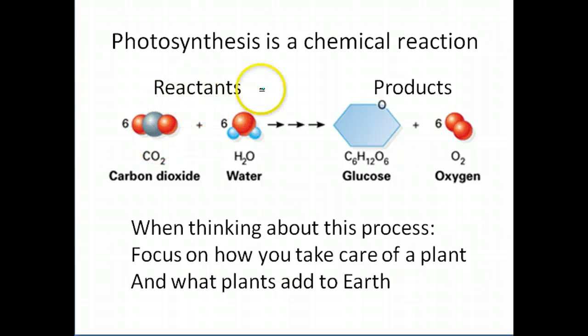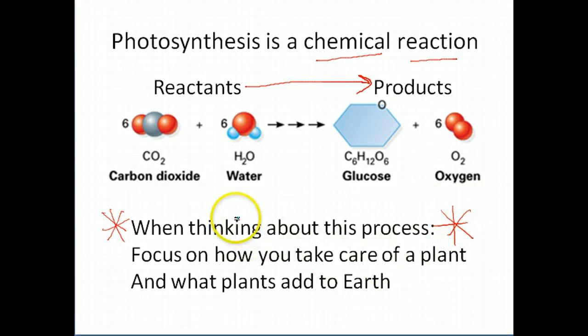Now for the overall reaction of photosynthesis, remember this is a chemical reaction. We're going to go from reactants to products. This slide essentially summarizes it. What I want to guide you to when you're thinking about the overall chemical reaction for photosynthesis is to really think about what happens when you are taking care of a plant. If you have a plant at home or you've been asked to take care of a family member's or neighbor's plant, what do you do to ensure that this plant survives when they come back? Probably the most obvious thing is you have to water the plant. We will figure out in this unit why you have to water a plant. But it is definitely one of the reactants that must go into this chemical reaction.